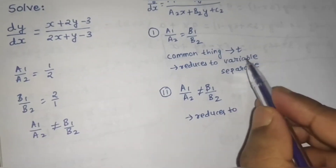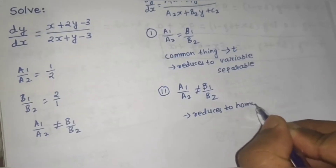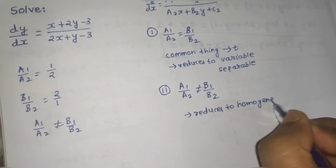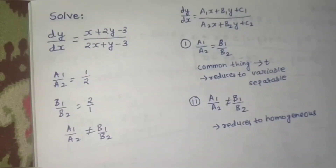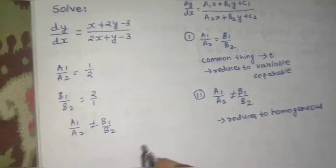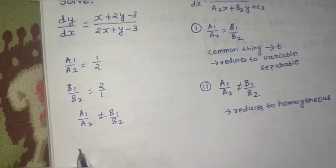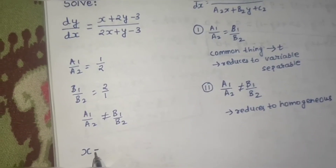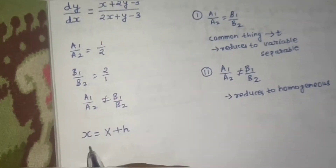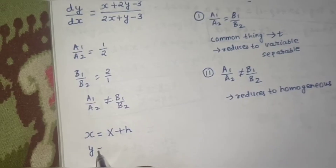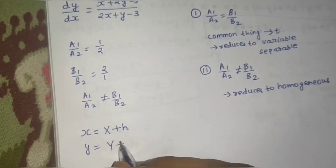The first type reduces to variable separable, and this second type reduces to homogeneous. We already know how to solve homogeneous equations, so we can apply that knowledge here. What we do is replace small x by capital X + h, and replace small y by capital Y + k.